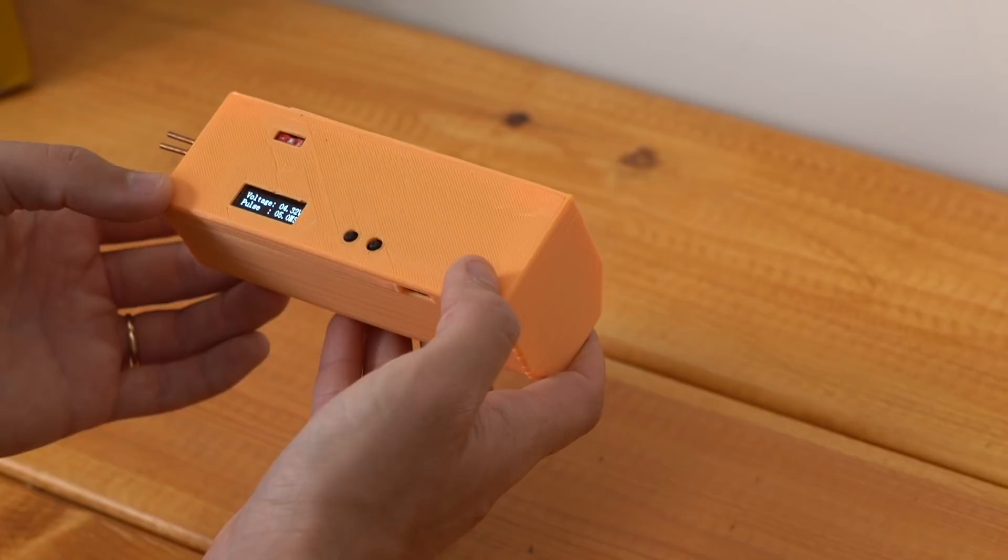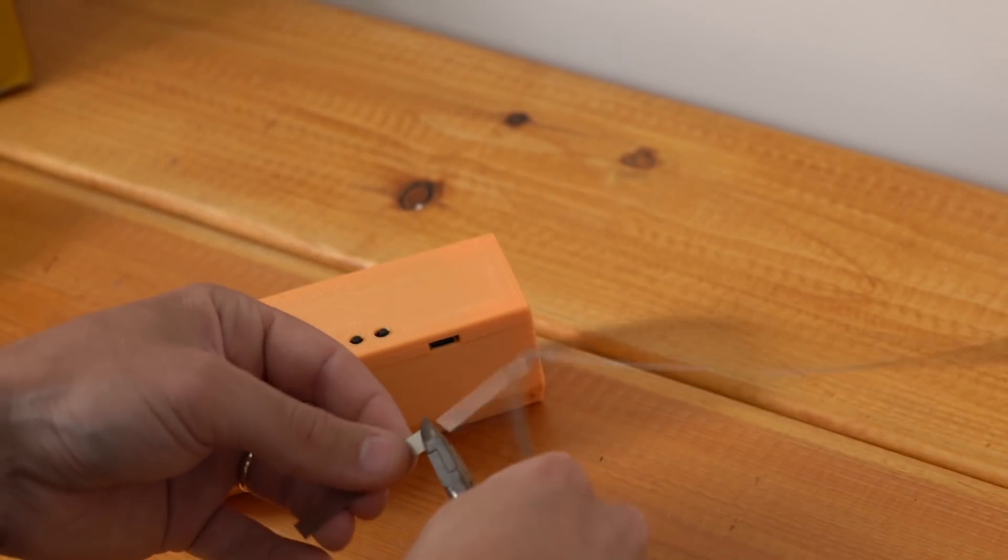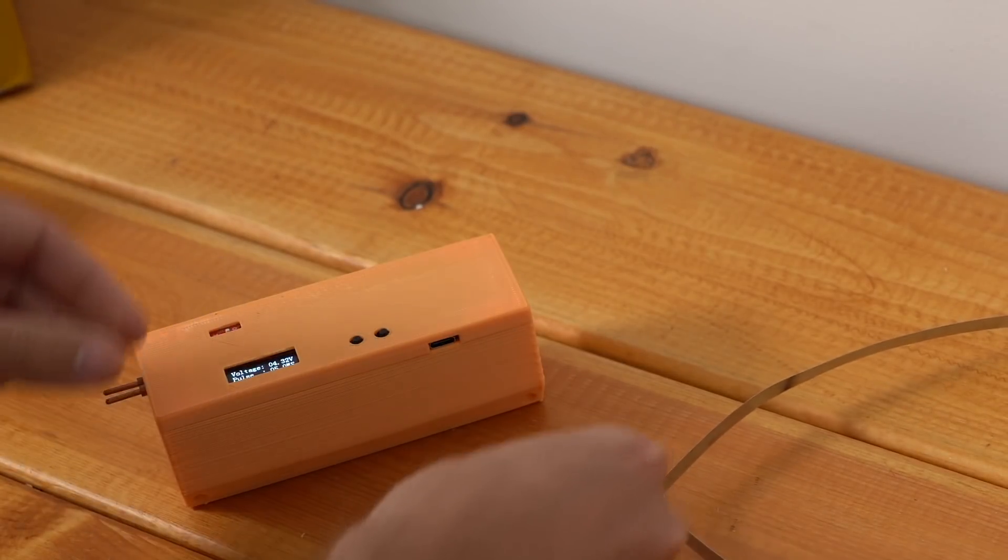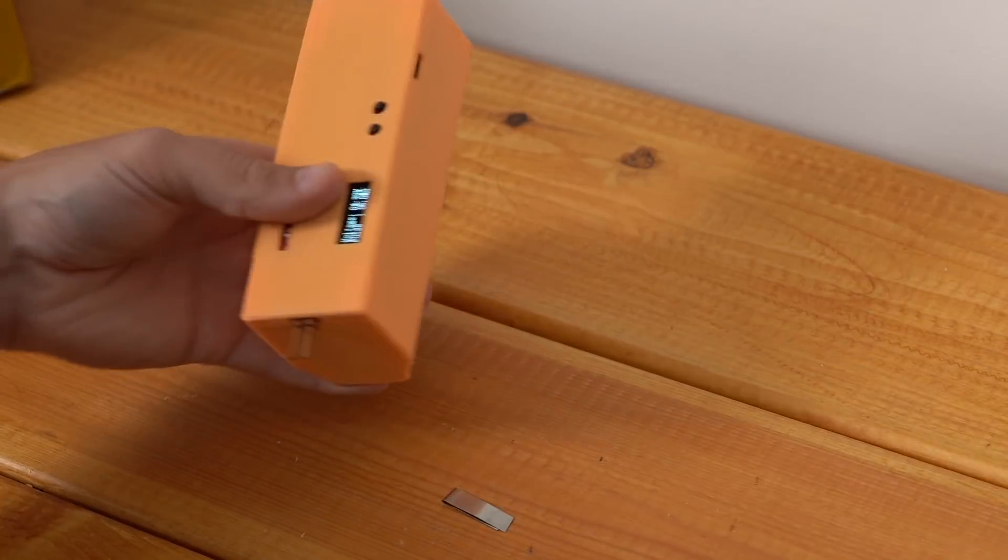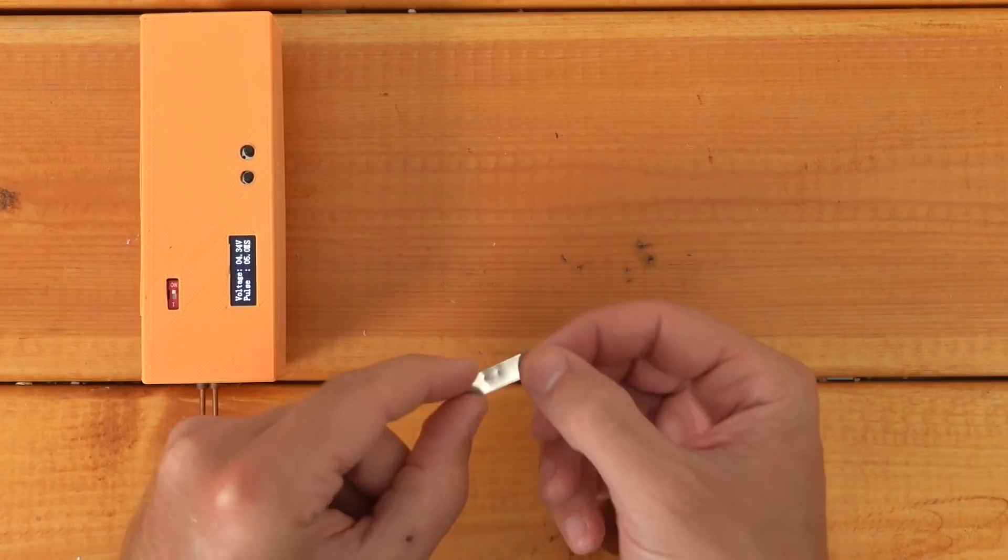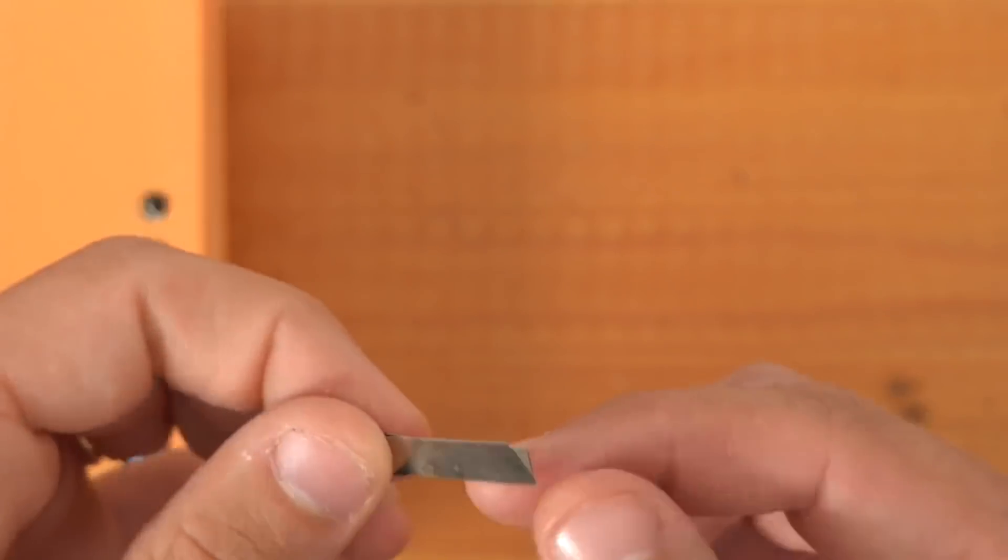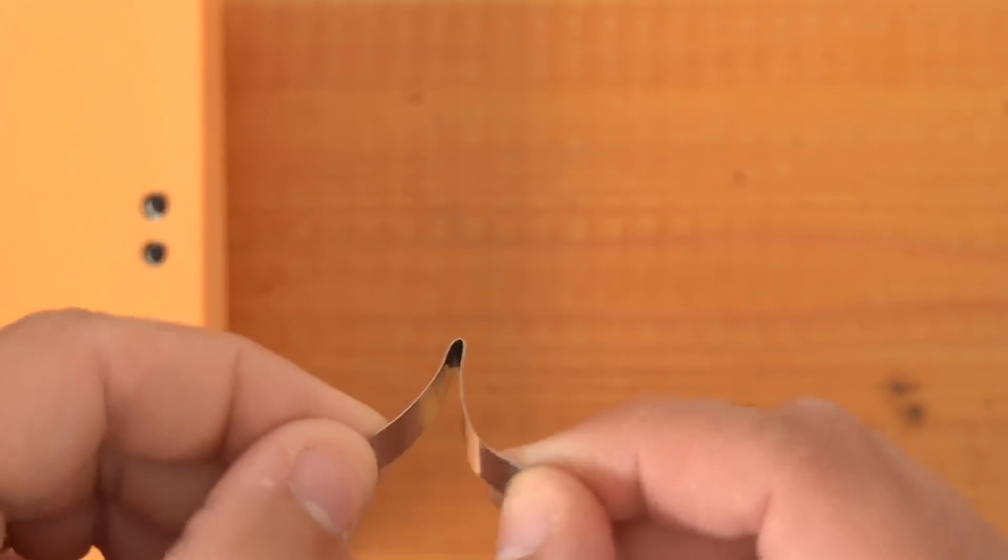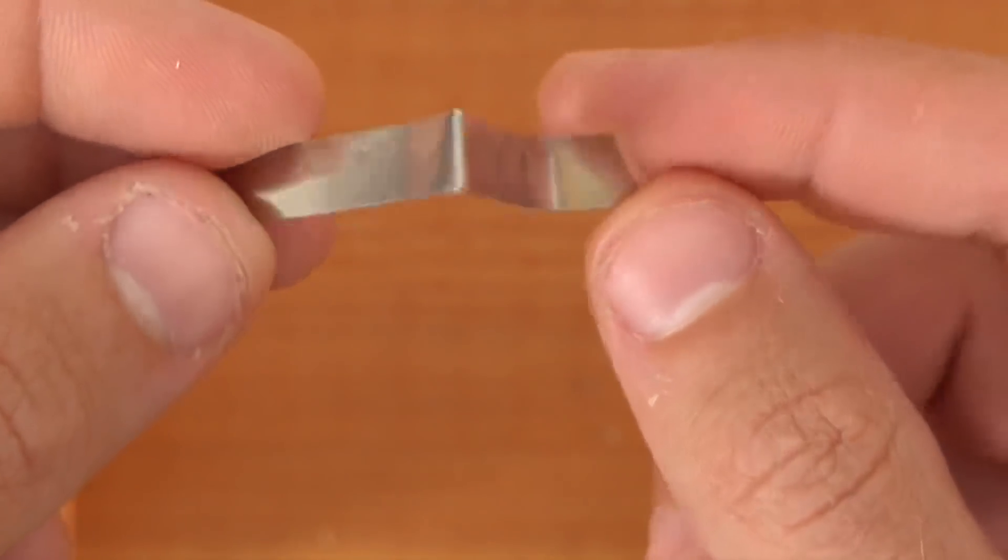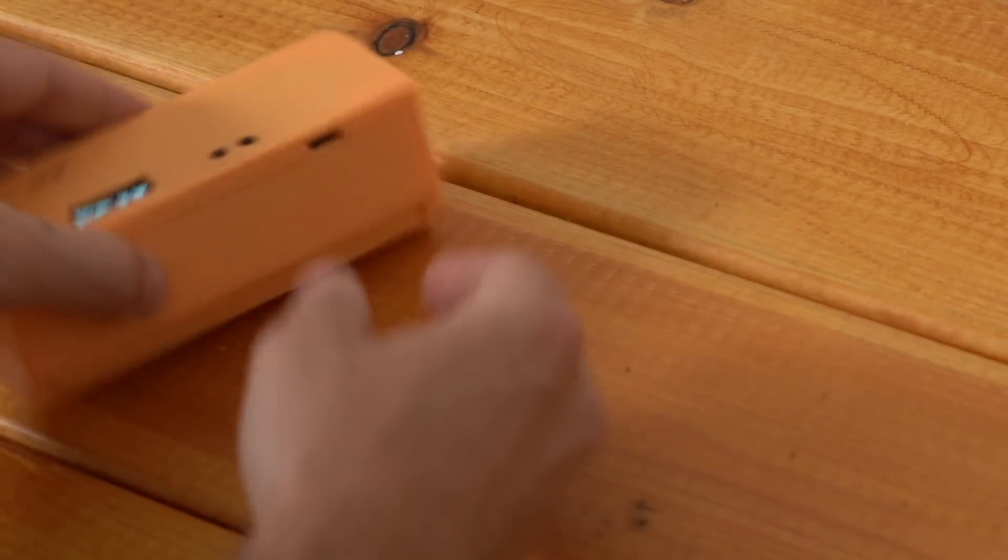Pulse is set at 5 milliseconds. All right got some nickel strip here, this is 0.15 millimeter. Let's just try folding this in half and doing a little spot weld on itself. Nothing bad happened that's good, so it looks a little superficial. Let's see if we can pull this apart. Oh wow yeah okay so that was not a great weld, that just popped right apart.